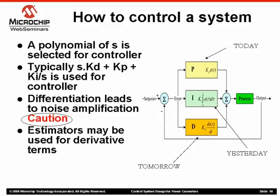The derivative term corrects for your expected error in the future — it is the 'tomorrow.' The P and I terms act as a low-pass filter in combination with the system, but differentiation is a little tricky to implement because the derivative causes noise amplification. Any noise present in the system due to measurement or quantization will get amplified by differentiation. The derivative term can be eliminated if estimators or observers are used.